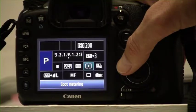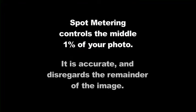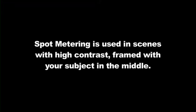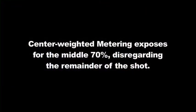Spot metering measures the middle 1% of the scene. It's extremely accurate on that section and disregards the rest of the image. This method is used mainly in scenes where there is a big contrast and the most important part is in the center of the frame — for example, a backlit scene. Center-weighted metering concentrates on the middle 70% of the shot, and the outside of the frame is less significant.